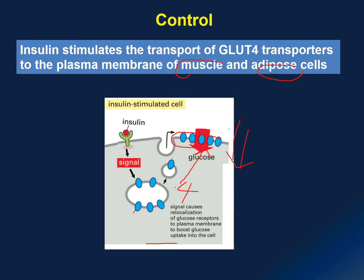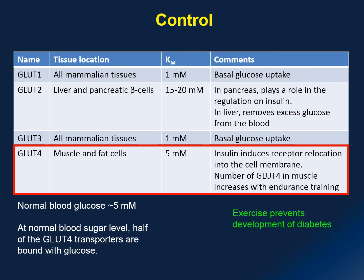When the glucose level returns to normal, insulin is no longer present, and glucose transporter number 4 is recycled back to the endosome for the next use. The Km value for GLUT4 is 5 millimolar, equivalent to the normal range of blood sugar during fasting. This means that at 5 millimolar, half of the GLUT4 transporters are bound with glucose molecules and will take glucose into muscle and fat cells for glycogenesis.